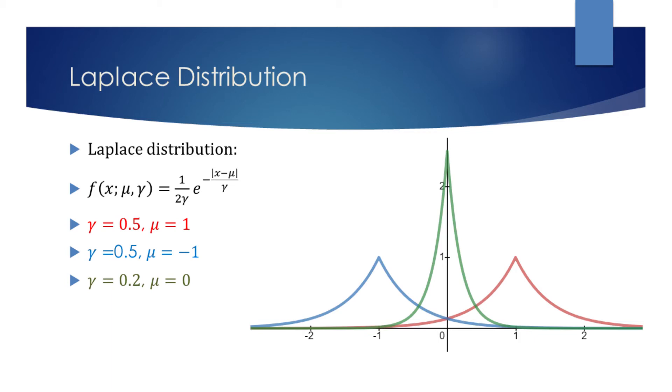The parameter gamma determines the sharpness of the peak. Lower the value for gamma, sharper the peak. For example, the green graph has gamma equals 0.2, the red graph has gamma equals 0.5. We can clearly see that the green graph with the lower value of gamma has a sharper peak.